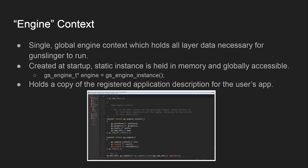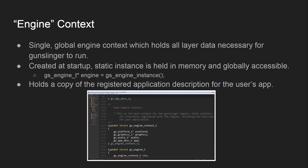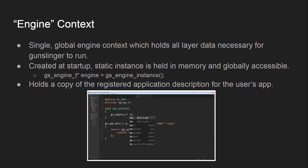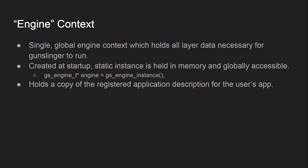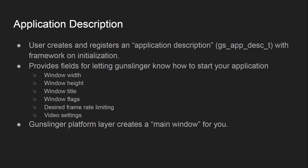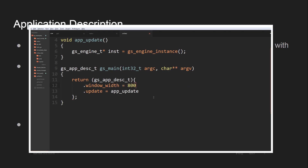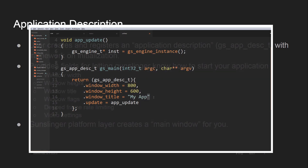At the core of the framework is an engine context — 'engine' is just shorter to write than 'framework.' Whenever you create an instance of an application for Gunslinger, an engine context holding all the layer data necessary to run Gunslinger is created for you and registered as a static instance, globally accessible. This instance holds various things, including a copy of the registered application description. The application description has fields for letting Gunslinger know how to start the application — things like window width, height, title, flags for resizable or fullscreen, desired frame rate, and other video settings.